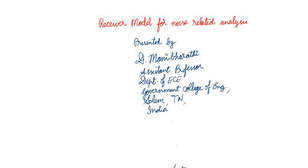Hi and hello to everyone. In this video, we are going to discuss about the receiver model for noise related analysis. Particularly, we are going to discuss for a continuous wave modulated system like amplitude modulation and frequency modulation, or angle modulation — how the receiver is modeled such that we can carry out the noise related analysis.